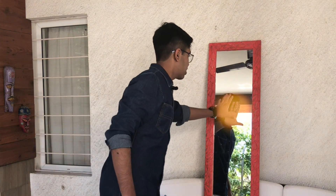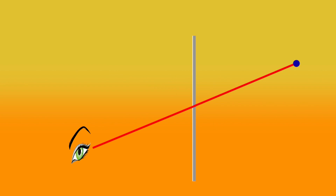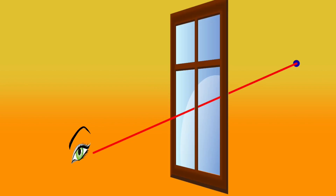A mirror behaves just like a window into another world. Light reflected off a mirror behaves just like light coming from the other world. Light bounces off a mirror and comes into our eyes. When this ray of light reaches our brain, our brain virtually extends the light ray back to a point behind the mirror. Interestingly, light behaves in the same manner when it comes from the other side of a glass window, as shown in the diagram.